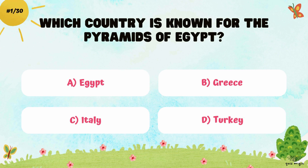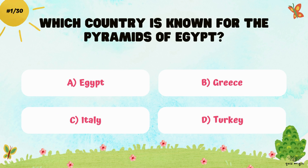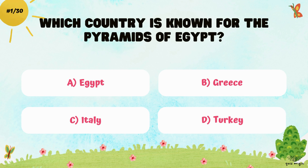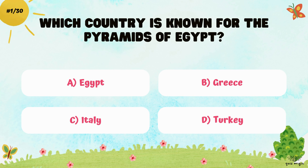Which country is known for the pyramids of Egypt? A. Egypt, B. Greece, C. Italy, and D. Turkey.